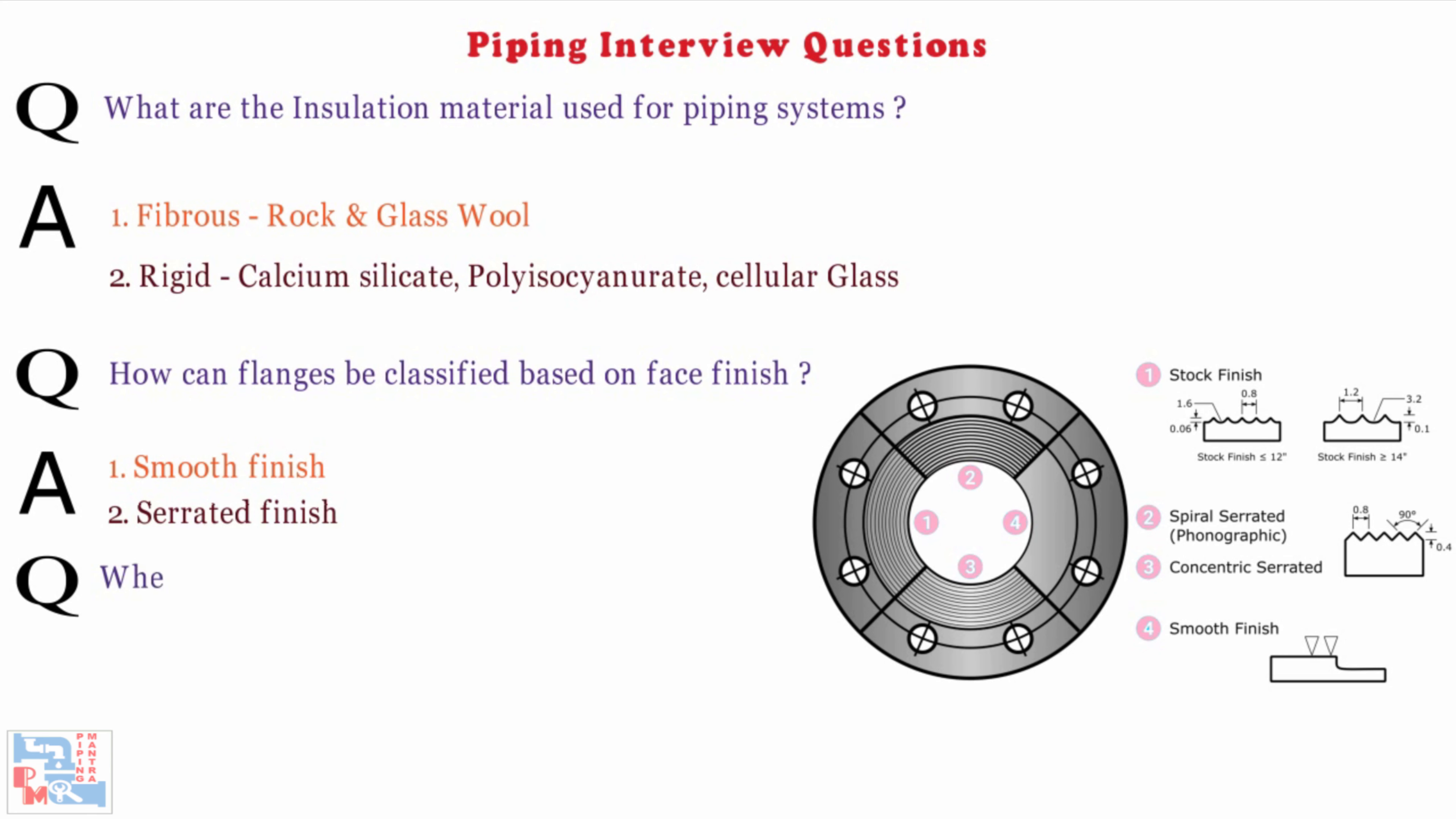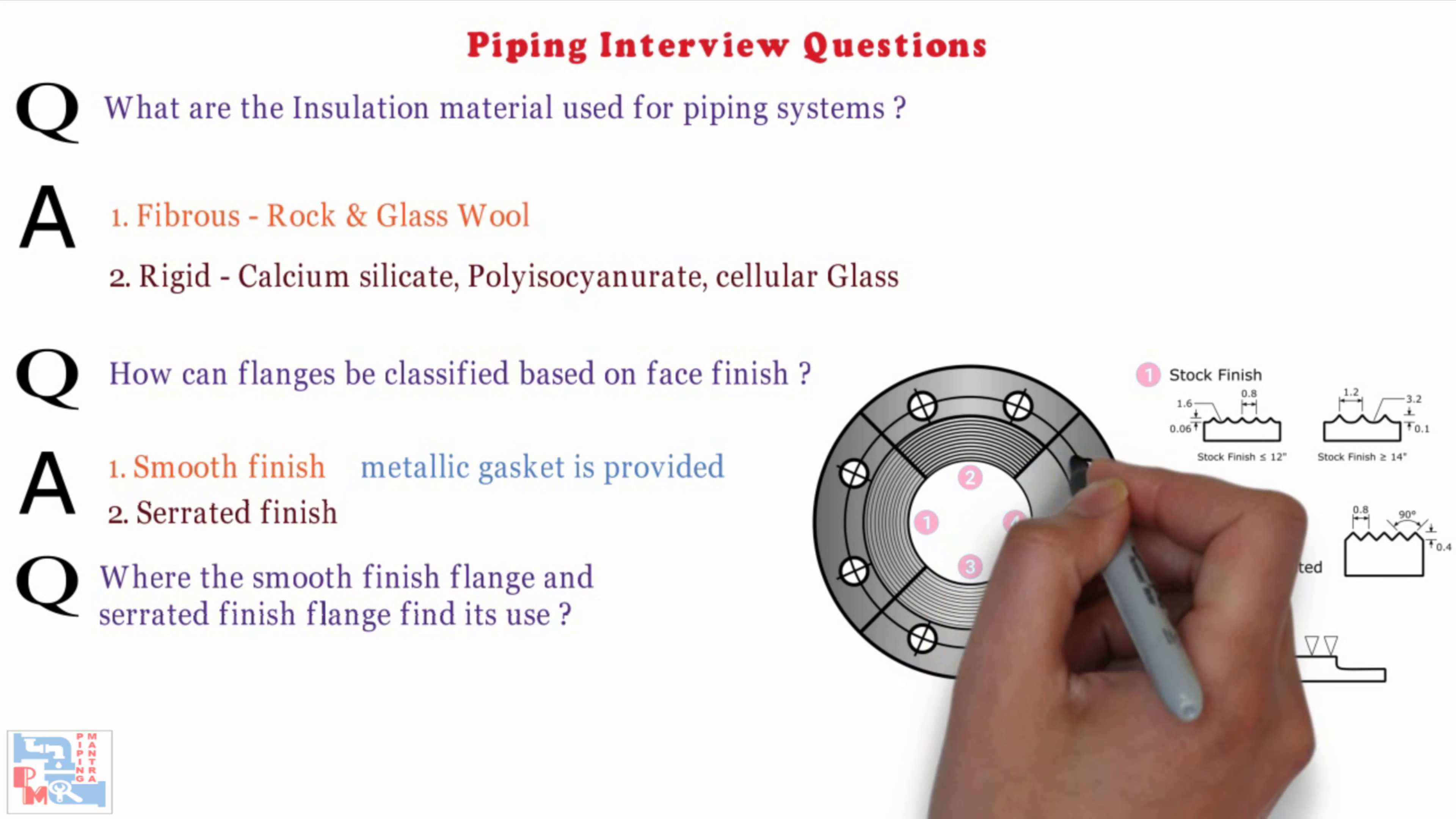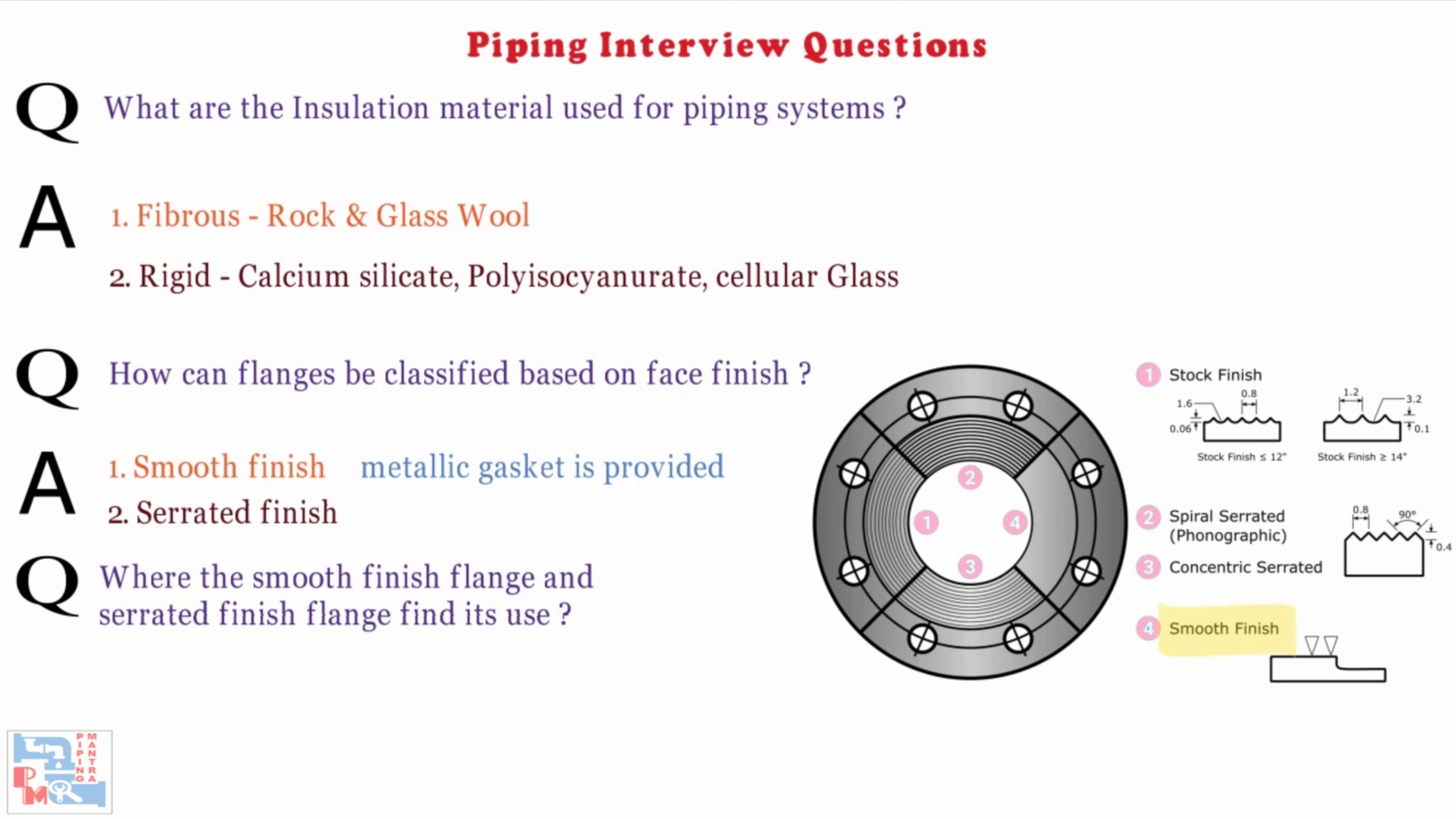Next, where are the smooth finish flanges and serrated finish flanges find its use? The smooth finish flanges is provided when metallic gasket is provided, and serrated finish flanges is provided when non-metallic gasket is used.